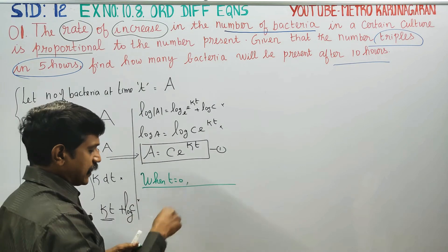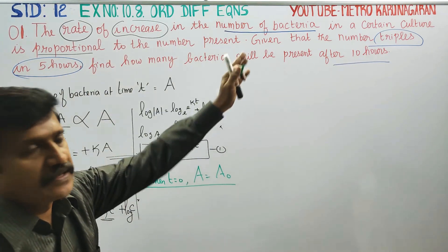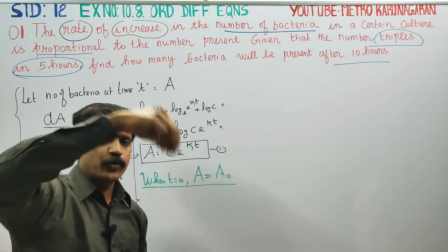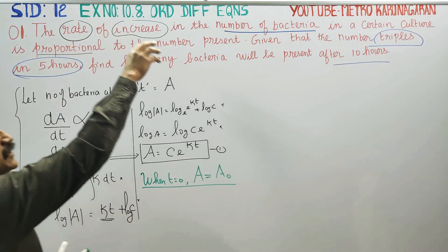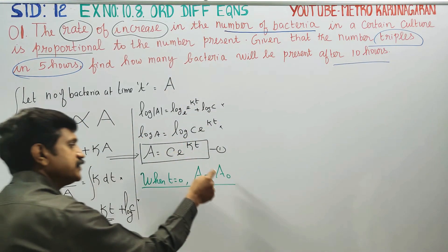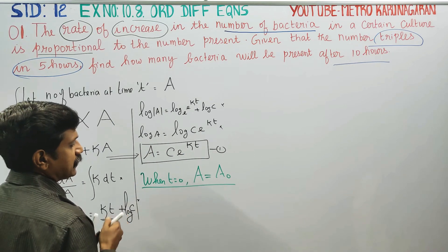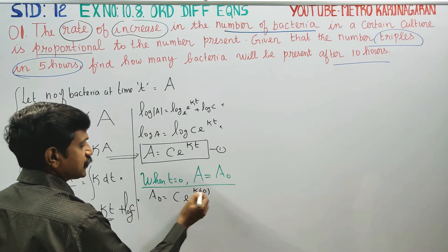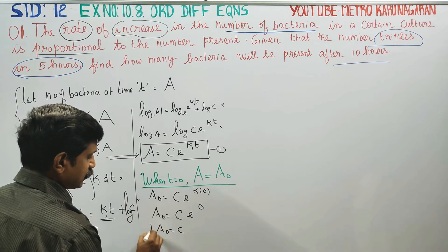A₀ is the initial amount. You can tell us that A is equal to A₀ — the initial amount. This is the initial condition. If you have 10 grams of yeast or 1000 bacteria, substituting t equals 0 gives A equals A₀, and therefore C is equal to A₀. So A₀ is equal to C.